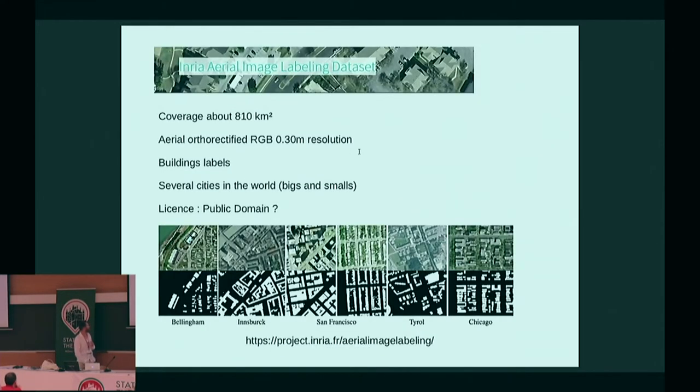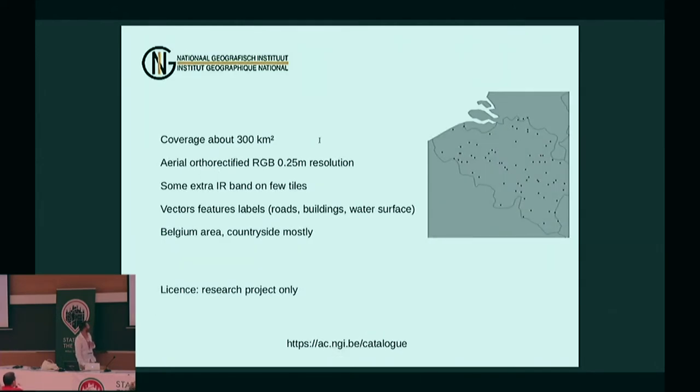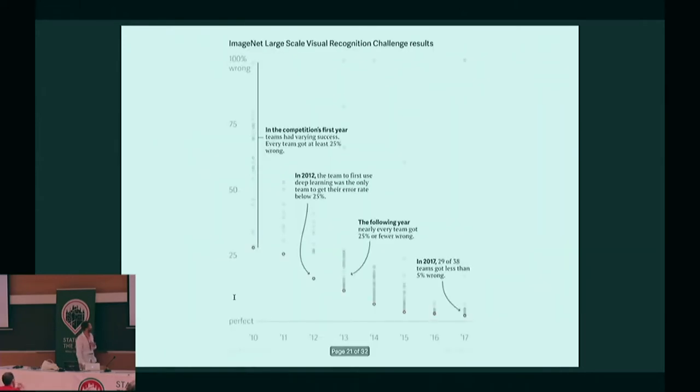Another dataset is INRIA. It's only focused on buildings. There are several kinds of cities, from small ones to big ones, but there is nothing about the countryside. It should be in public domain, but there is nothing explicitly said about that, so it has to be checked. The other one I used is based on the Belgium landscape. There is a countryside area covered. It covers roads, buildings and water surfaces on the labeled part. But on the license, it's a research project only, so you cannot choose to do anything you want.